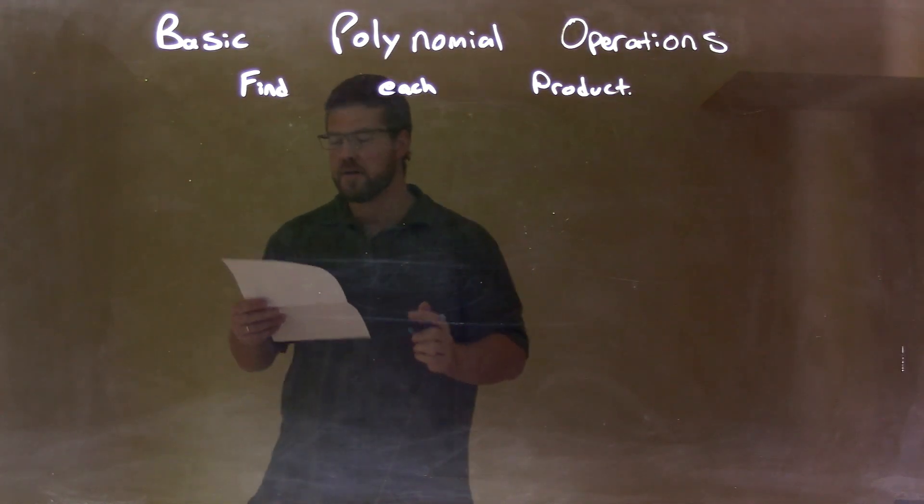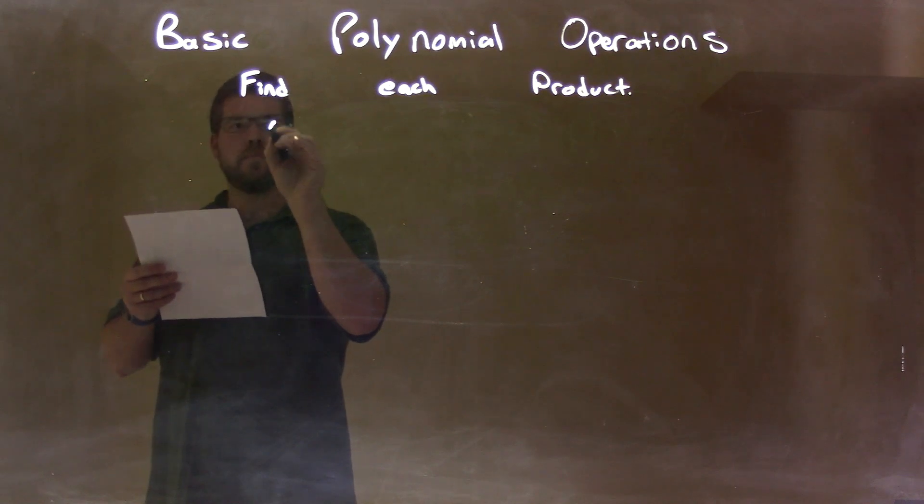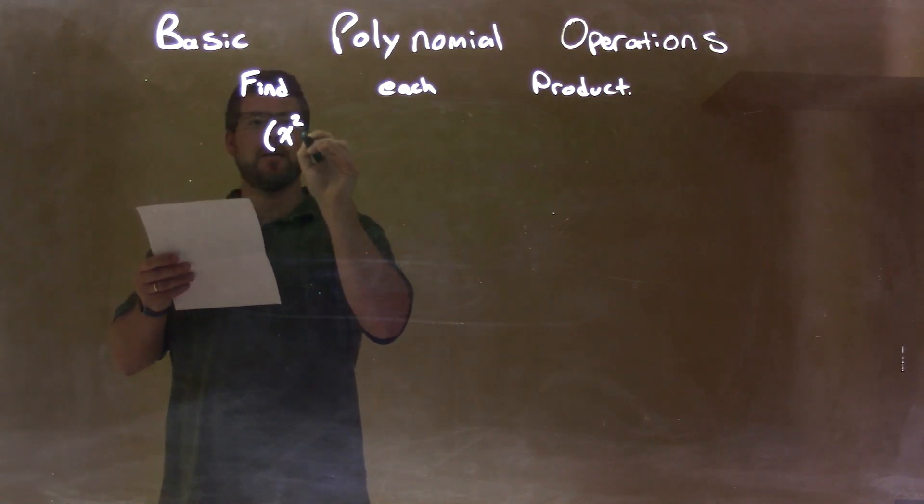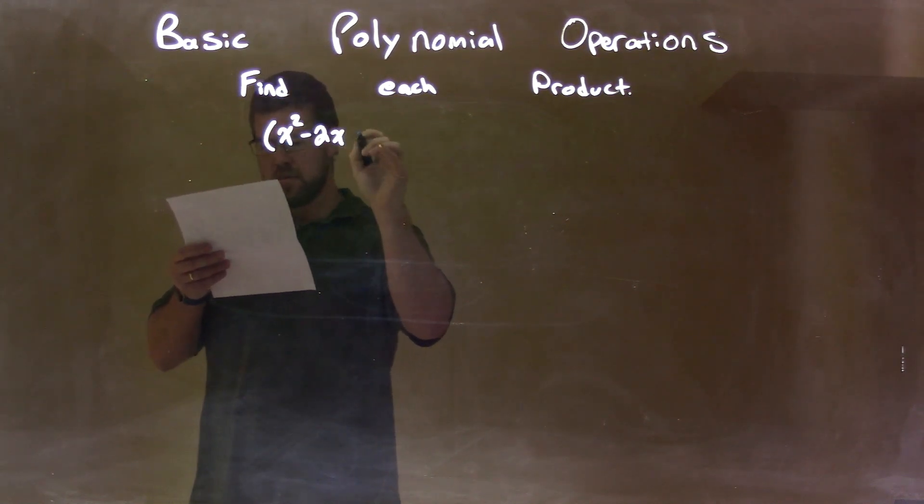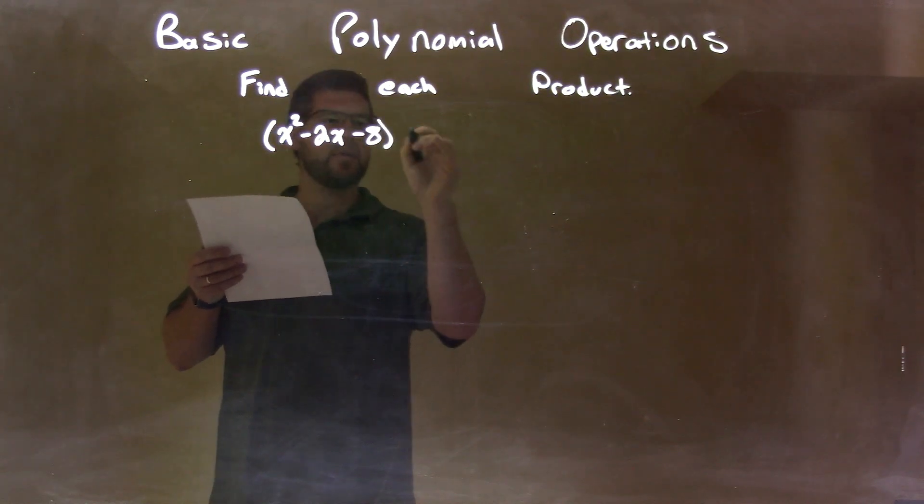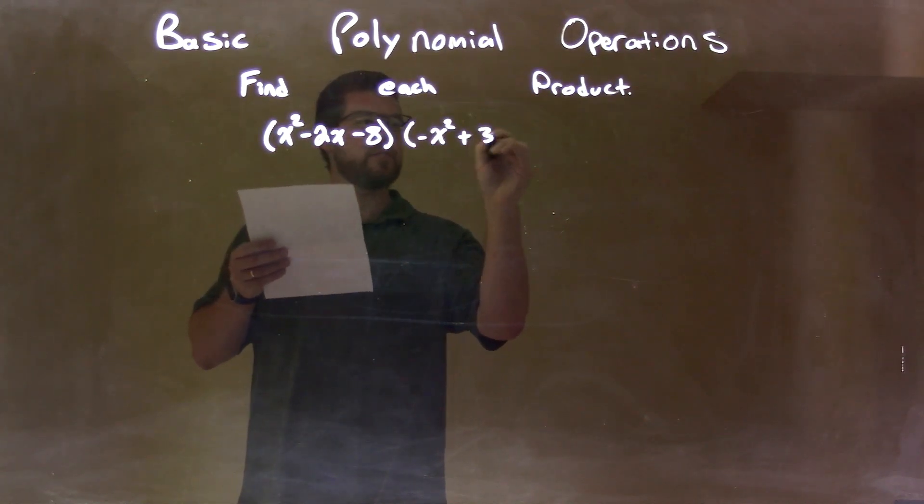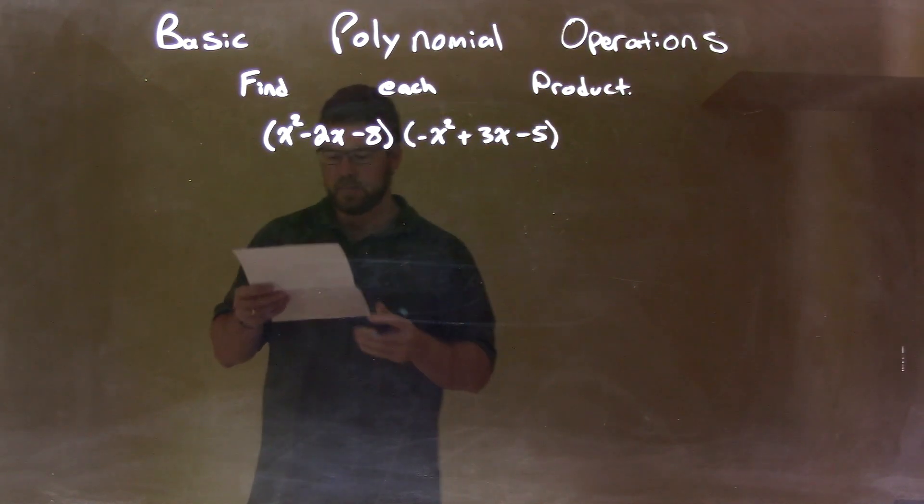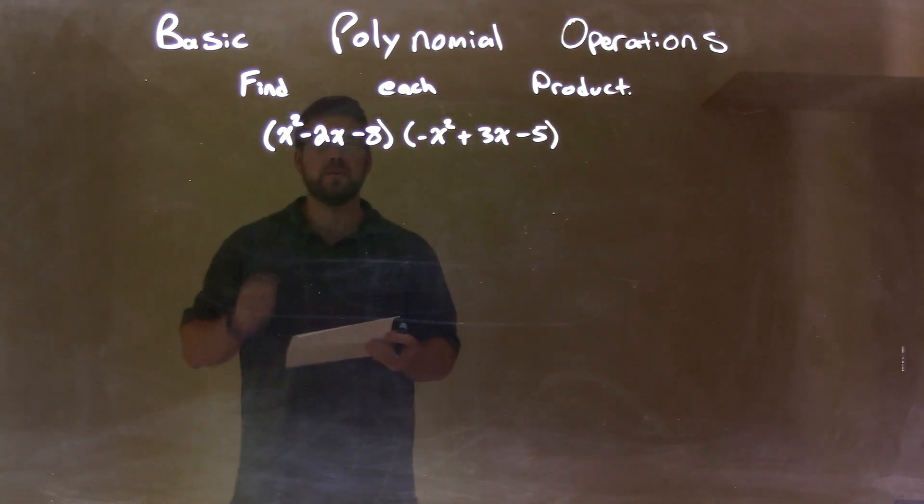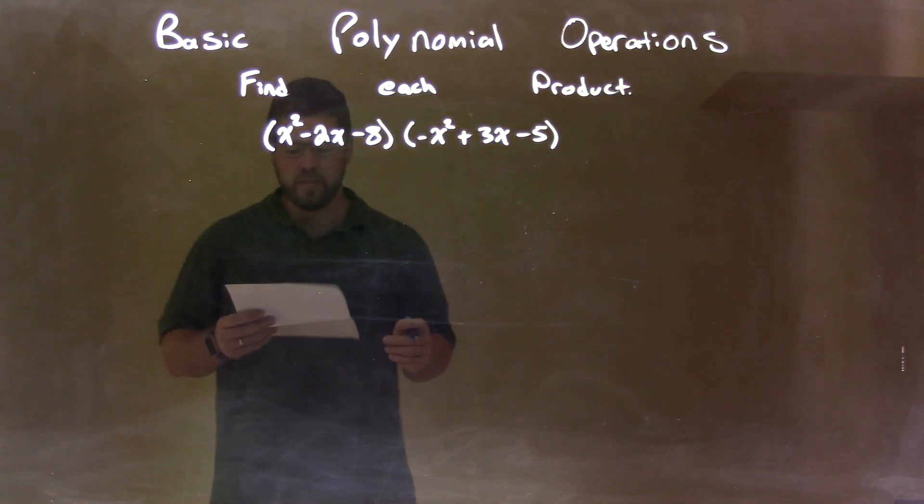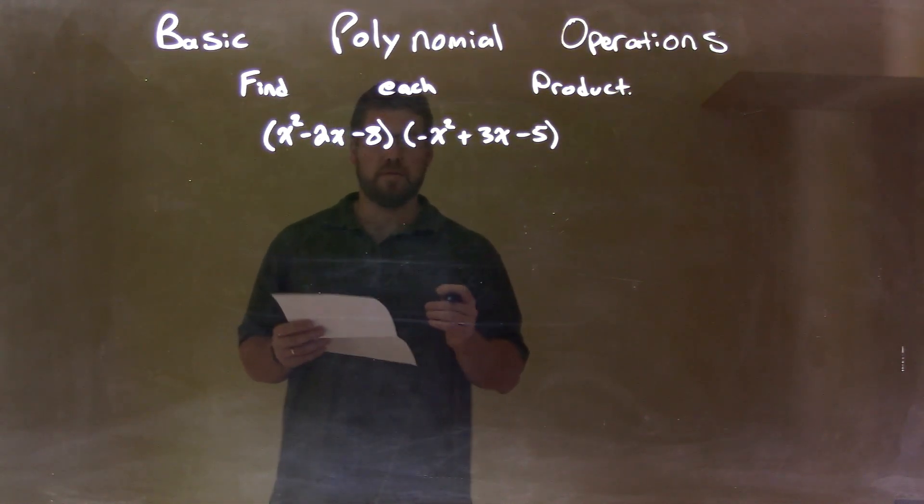So, if I was given this product, x squared minus 2x minus 8 times negative x squared plus 3x minus 5, what I want to do is multiply all parts of my first parenthesis by all parts of my second parenthesis.